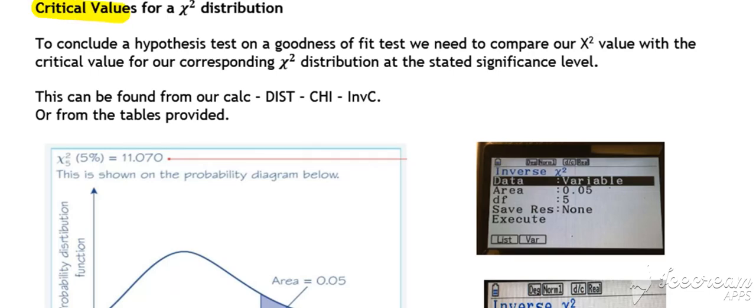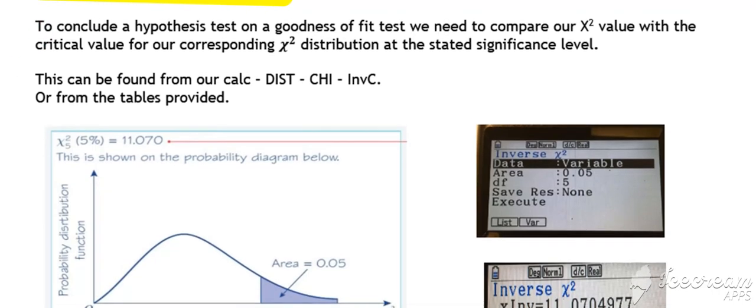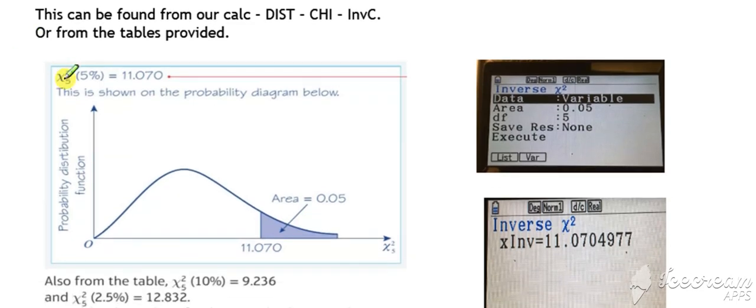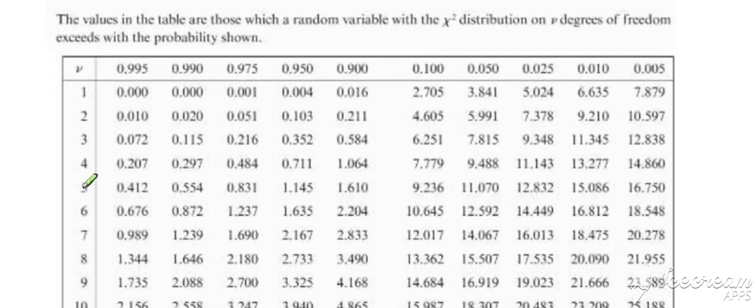Considering the critical values for a chi-squared distribution, these can be pulled off from the table. If we look at what it means in terms of a diagram, here we have the chi-squared 5 distribution. Five degrees of freedom gives us this shape. At the 5% significance level, this critical region must equal 0.05, which corresponds to a critical chi-squared value of 11.070. In our tables, 5 degrees of freedom at 5% significance level gives us 11.07.